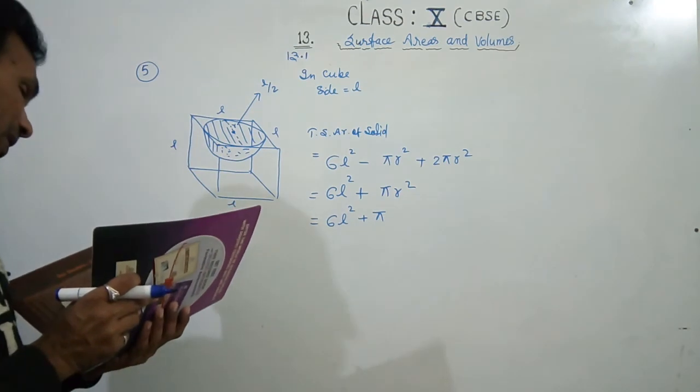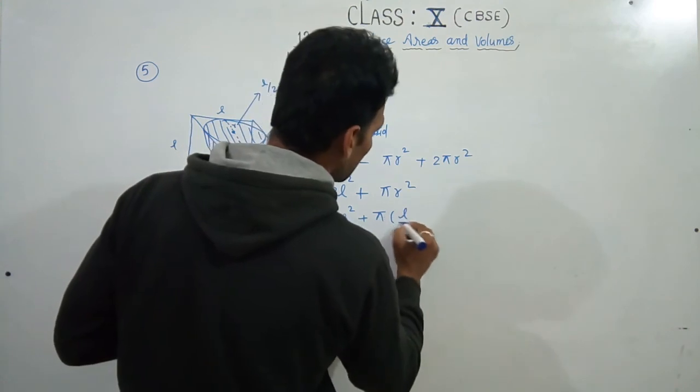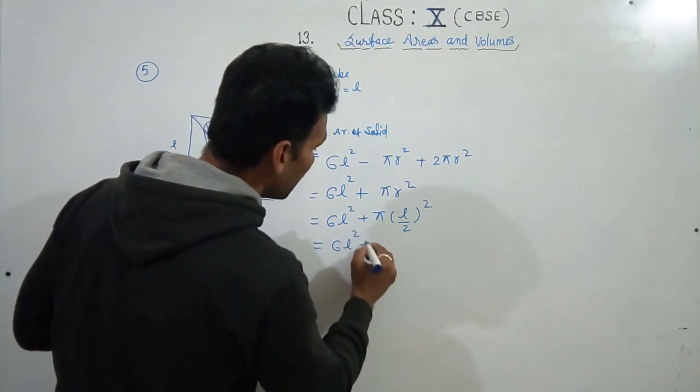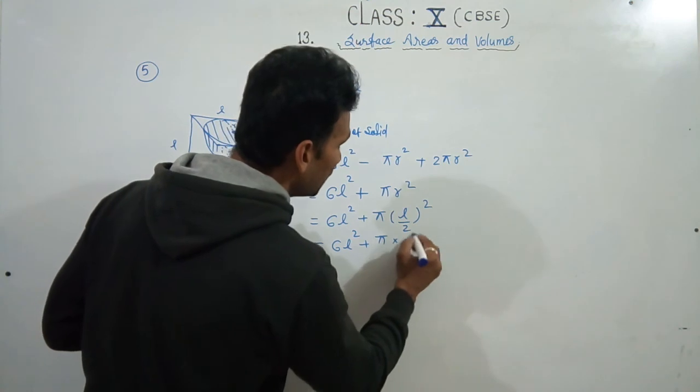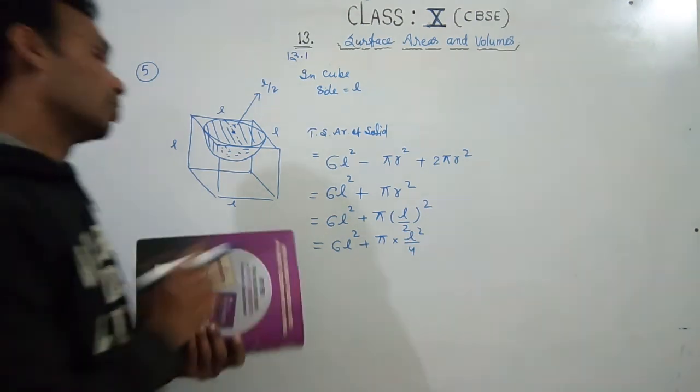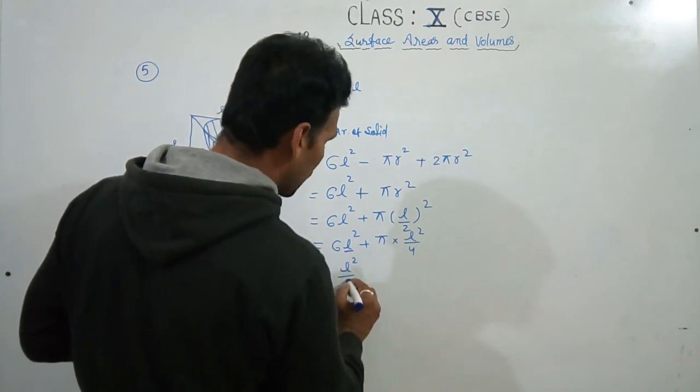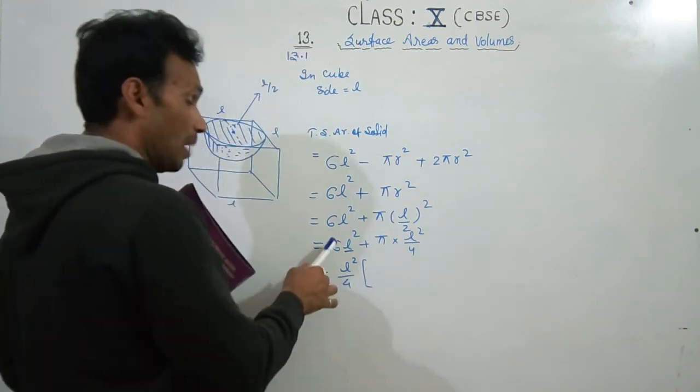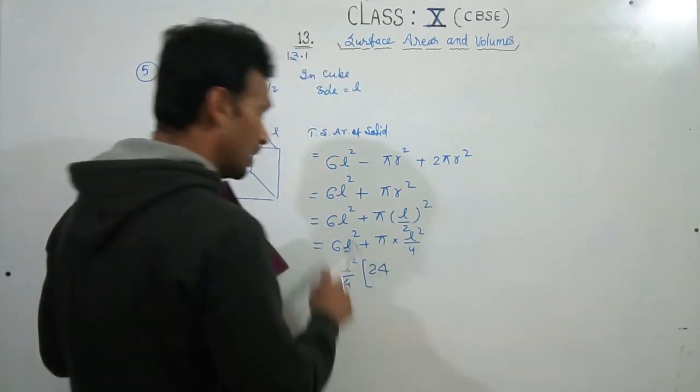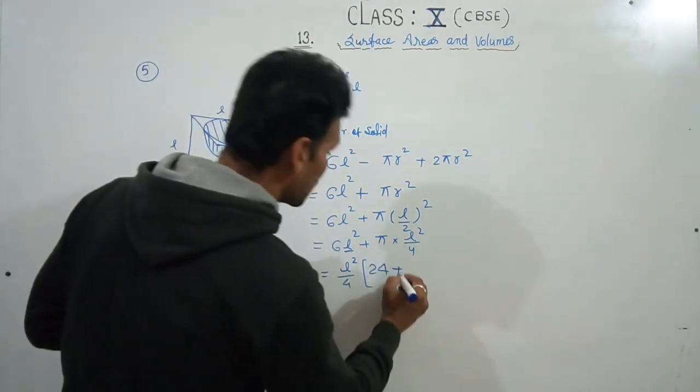Then 6L². So we can write 6L² plus π into L² upon 4. Right? L² upon 4. If we take 4 common, both are L². If we take L² as common and 4 as common, what will we have? How much is remaining here? 6L² should remain. If we take it, then how do we write it? So this is 6 × 4 = 24L². If you see, if we multiply this inside, then 6 × 4 = 24 plus π.